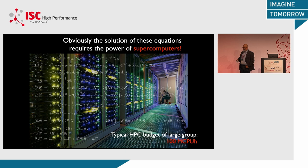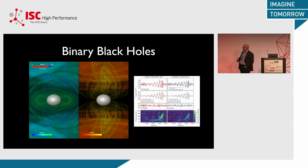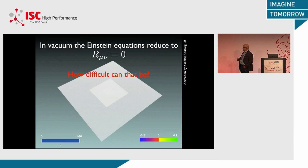Without HPC we would have just been left with beautiful equations without solutions. But now we have solutions. One of these is in the case of binary black holes. This is the same slide Ed has shown — the first detection was in 2015, but ten years earlier, in 2005, we had already computed that waveform theoretically. In vacuum, black holes have no matter, and Einstein's equations reduce to R_μν = 0. That looks like a simple algebraic equation, but it is really a second-order highly non-linear differential equation.